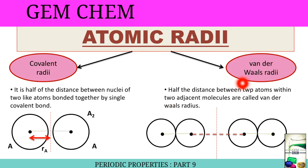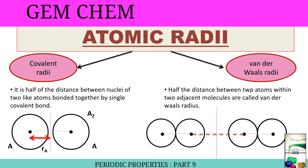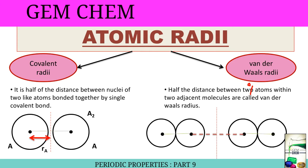What is van der Waals radii? It is half the distance between two atoms within two adjacent molecules. That is, if this is one molecule and this is another molecule, then the distance between these two atoms is considered as van der Waals radii.